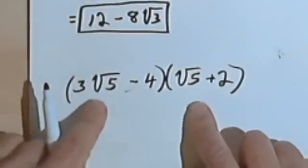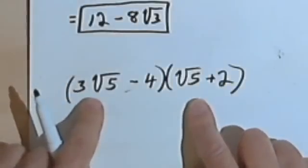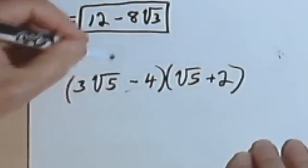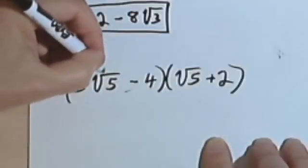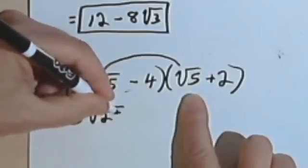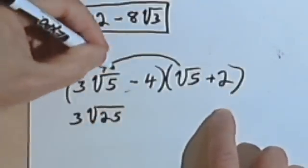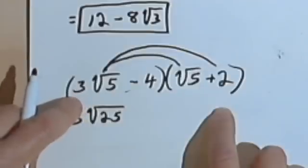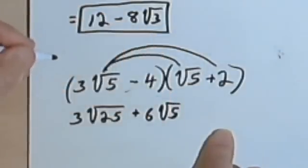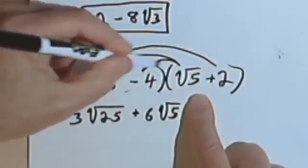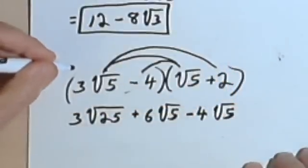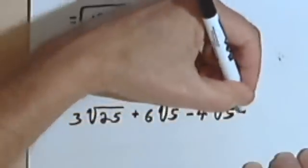This problem looks similar to the kinds of binomial multiplications where you FOIL them, and we're going to FOIL this as well. I've got 3 times the square root of 5 times the square root of 5 — I'll multiply those two first terms together, giving me 3 times the square root of 25. I'll multiply my outside terms: 3 times the square root of 5 times 2, giving me 6 times the square root of 5. My inside terms give me negative 4 times the square root of 5. And my last terms, negative 4 and 2, give me a negative 8.